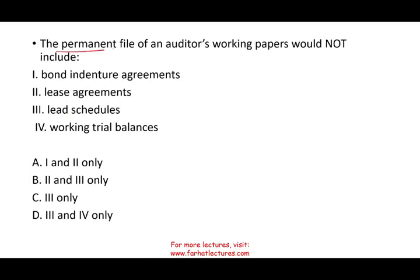The permanent file of an auditor's working papers would NOT include which of the following? We already know the bond indenture would be included, so A is out. A lease agreement is usually a long-term agreement, so we can eliminate two and take out B as well. Lead schedules go in the current file, not the permanent file. Working paper trial balances are also part of your current audit evidence, not the permanent file.